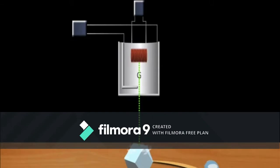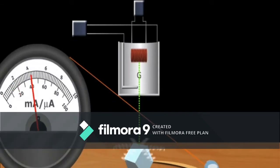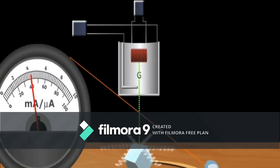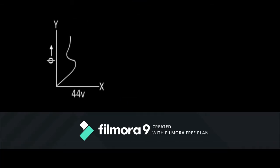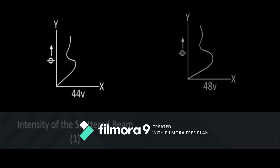These diffracted beams of electrons were detected using a moving detector, and the intensity of the diffracted beams was determined. The intensity of these beams was then plotted against the applied potential difference, producing the curves shown on the frame.